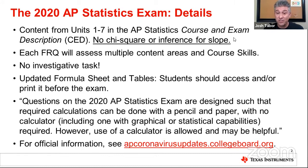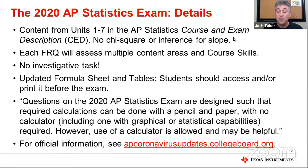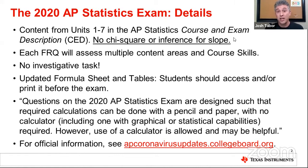Something important to quote exactly: questions on the 2020 AP Statistics exam are designed such that required calculations can be done with paper and pencil with no calculator, including one with graphical or statistical capabilities. However, use of a calculator is allowed and may be helpful. For official information, the go-to place is apcoronavirusupdates.collegeboard.org — that's the final word on all of this.